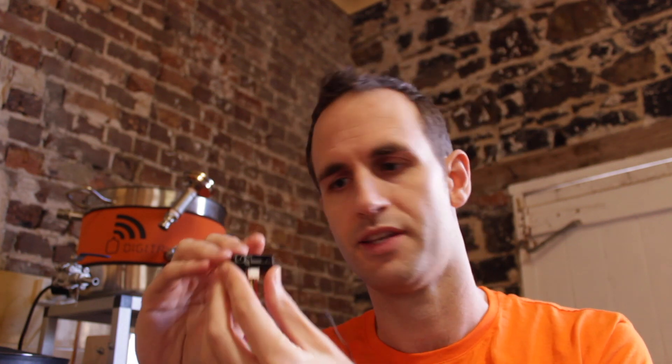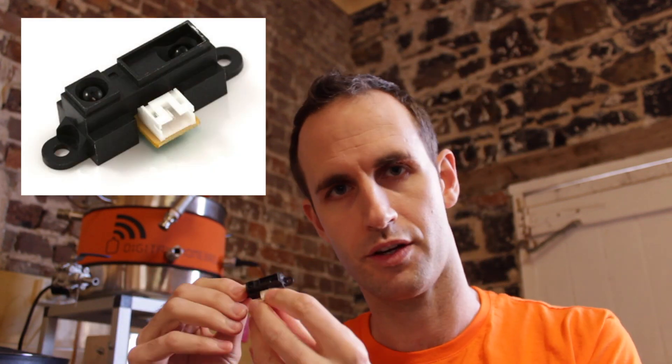So today I was wondering about an alternative in case we need an alternative to just weighing the kegs, we could also use these infrared distance sensing sensors. Now this is a Sharp GP2D120 sensor that goes from about 4 to 30 centimetres in sensing range.